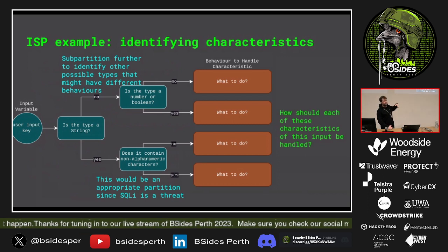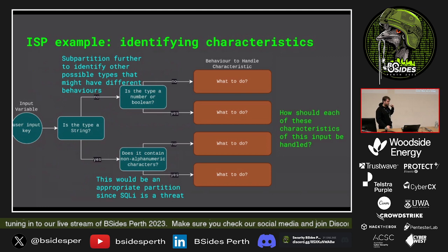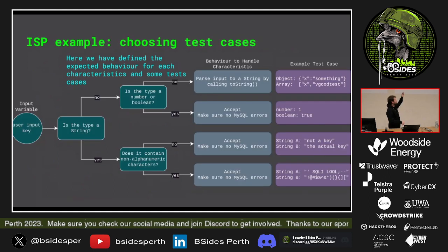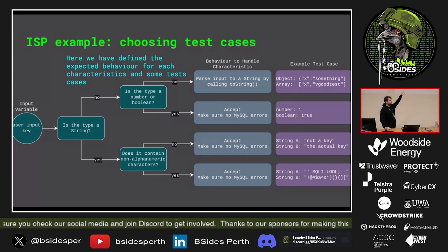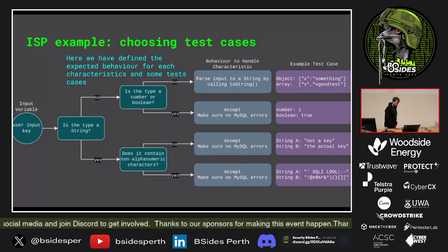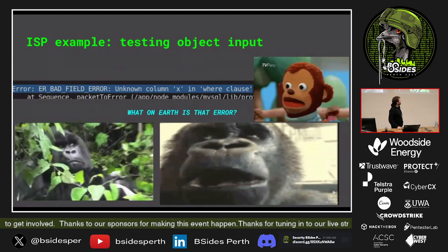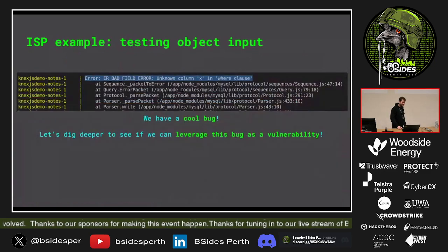First thing you probably want to check is: is it actually a string? Then keep asking questions and breaking down the problem. For example, if it isn't a string, is it a number or boolean, and what should happen? If it isn't, is it an object or an array — what is the behavior there? We also need to consider what the threats are for those inputs. I broke down: are there non-alphanumeric characters, thinking of SQL injection, because those inputs are going to go to an SQL query. Then we try out this first object input in Burp Suite — whack it in there, see what happens — looks all good... and we get an SQL error.